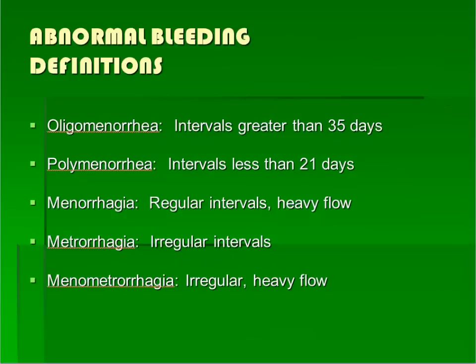Common words associated with abnormal uterine bleeding, and their definitions, include oligomenorrhea, polymenorrhea, menorrhagia, metrorrhagia, and menometrorrhagia.